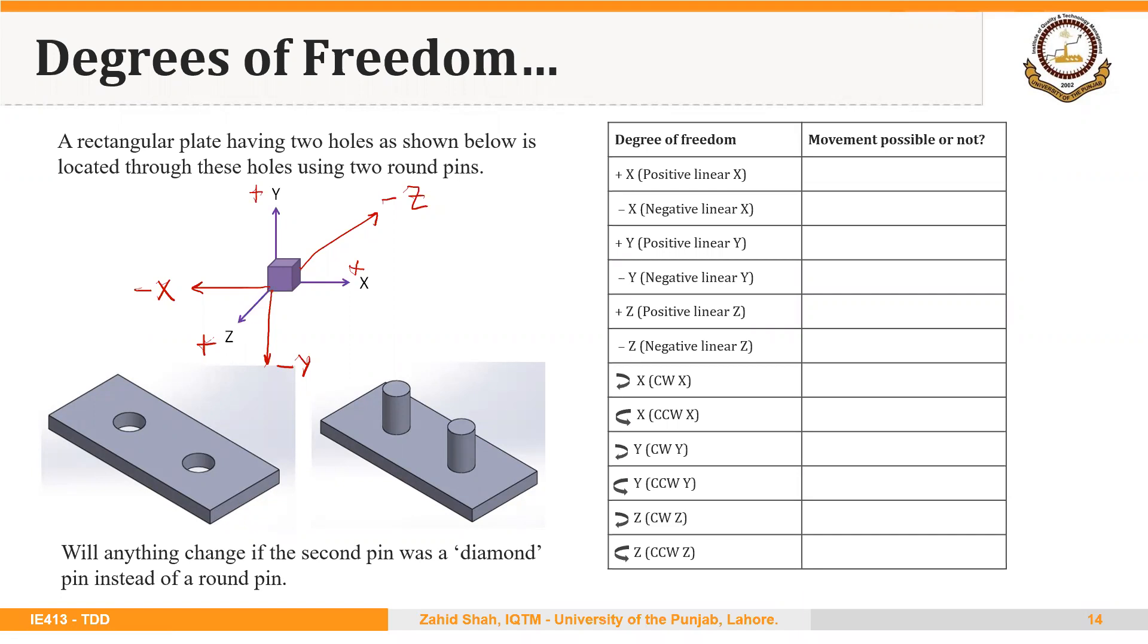You will see another example of restricting degrees of freedom. Here instead of one hole, we have two holes in the workpiece that we are locating. The fixture base or the base of the jig has two pins that are press fit into the body of the fixture or jig.